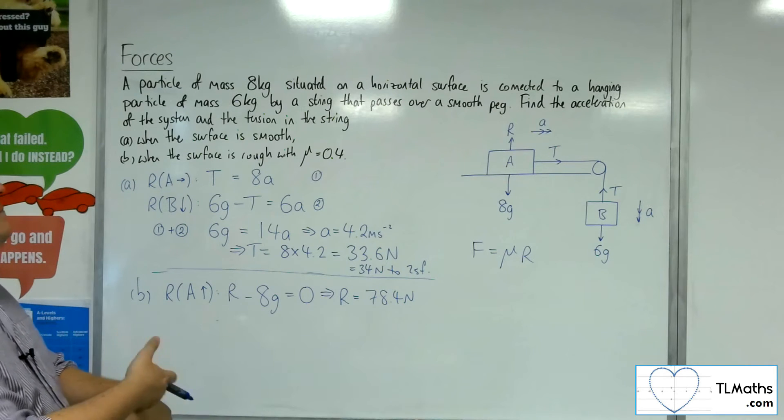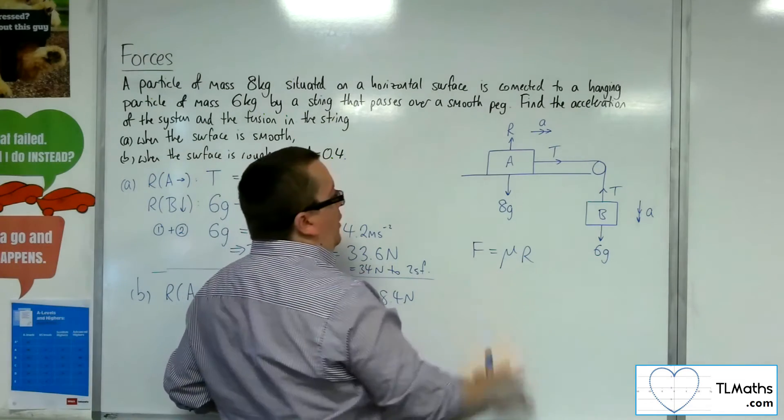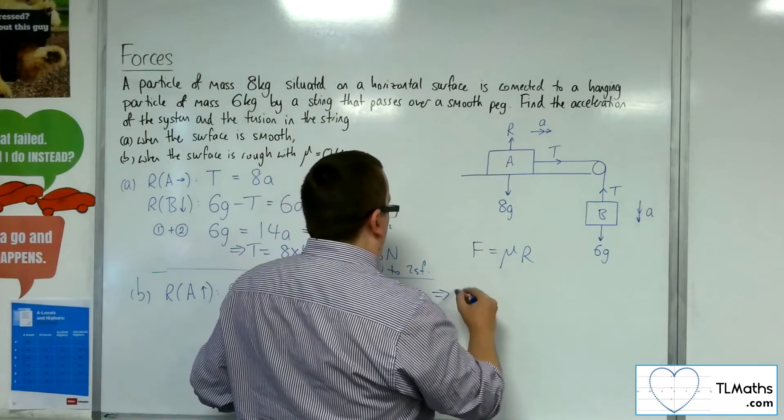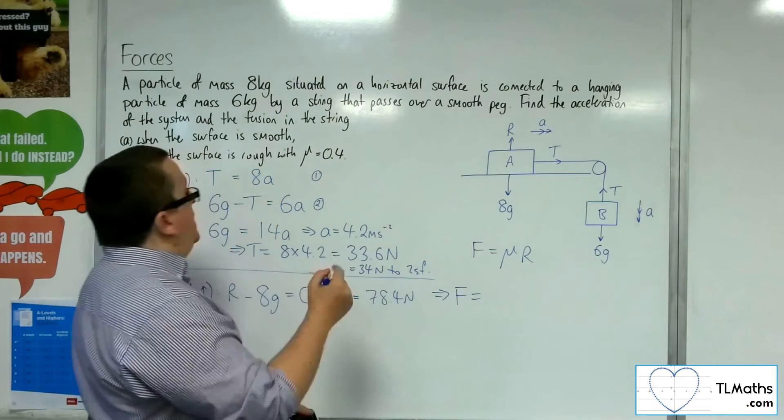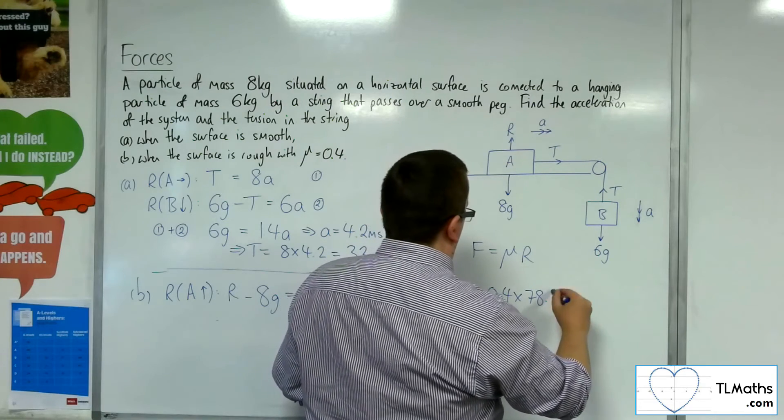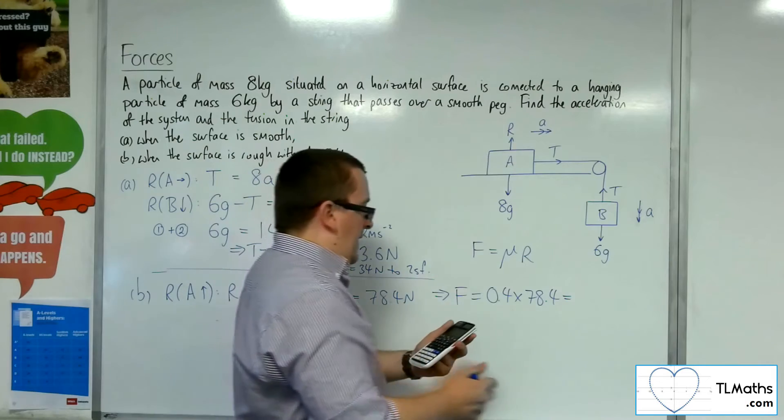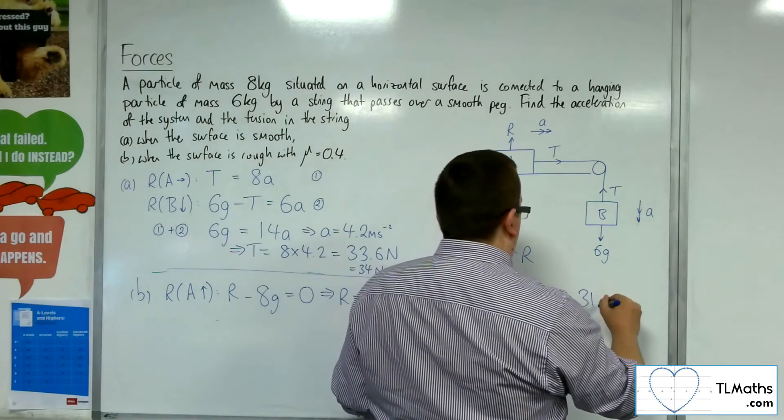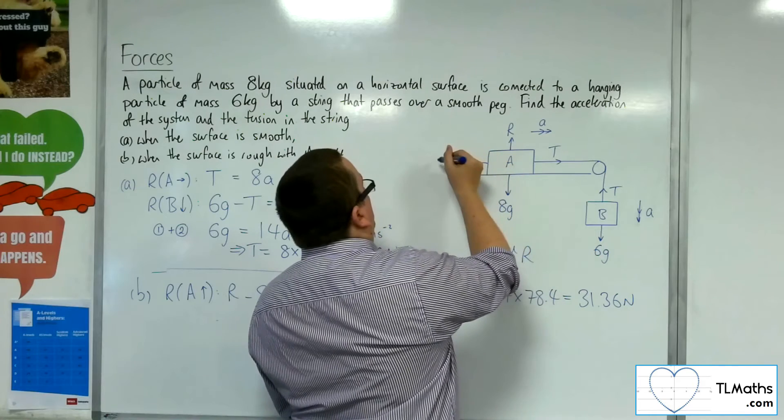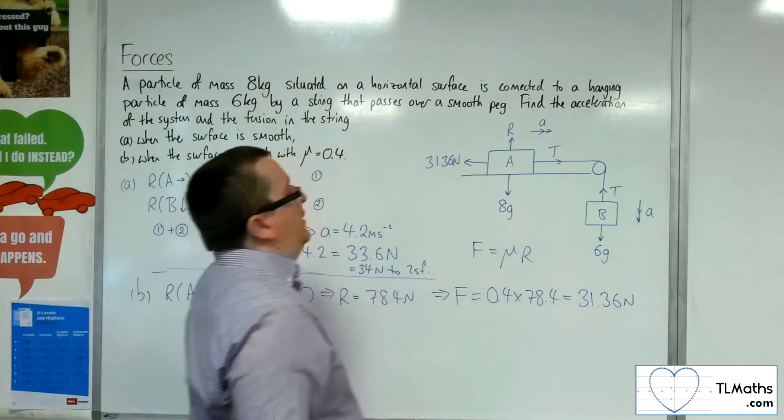So because the particle is moving, we have this F equals mu times R here. So that means that the frictional force is equal to mu 0.4 times the 78.4. So that gets us 31.36 newtons working against us.